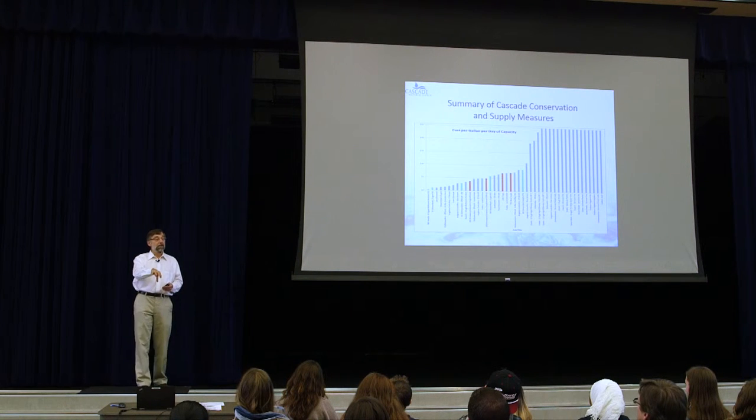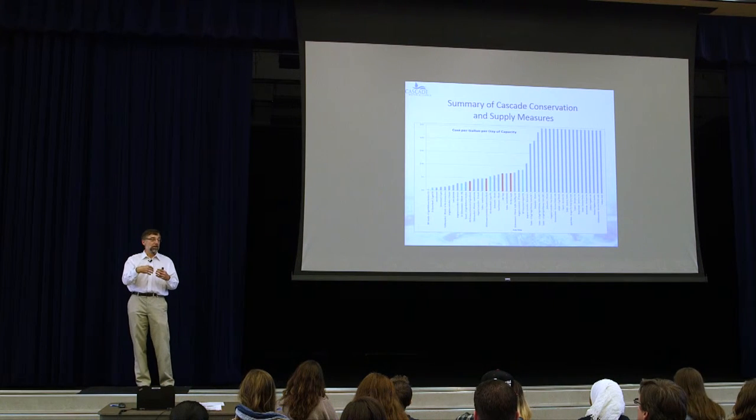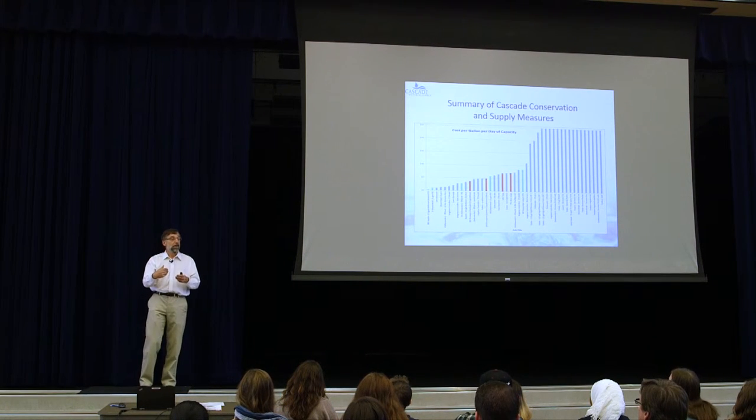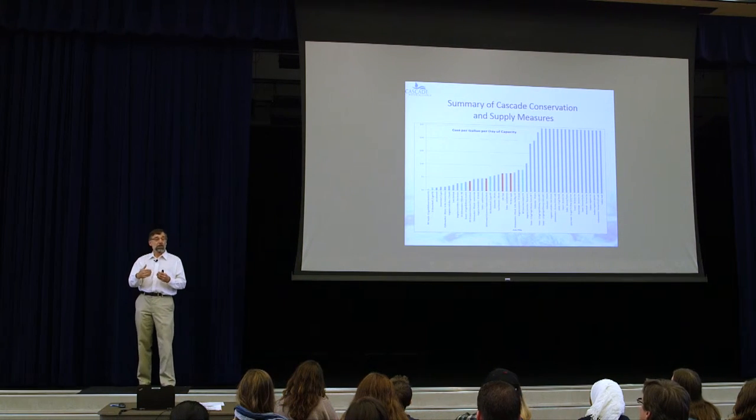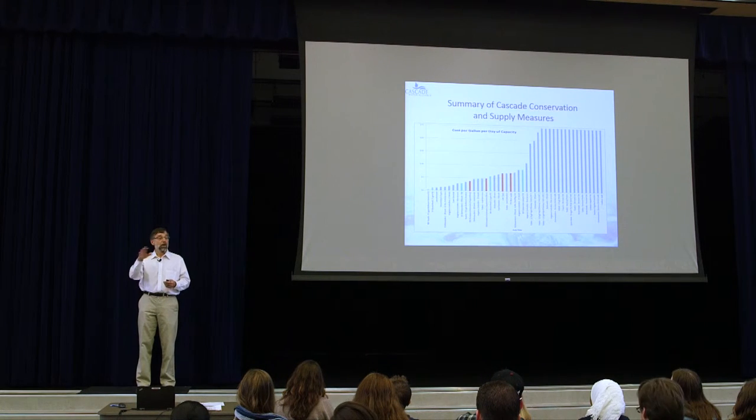One tool not included in this conservation chart that I think is really part of the equation is substitution — do we have other ways to meet those demands, particularly peak season demands, rather than out of drinking water? An obvious one is wastewater reuse, net zero projects, etc. You could think about how we could make efficient use by using other resources rather than our drinking water.